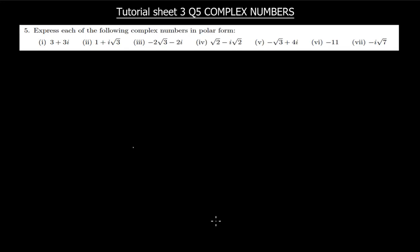This is question five from tutorial sheet three. The question asks us to express each of the following complex numbers in polar form. Since we are being asked to express them in polar form, it means they are currently given in rectangular form.